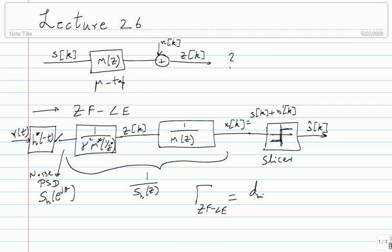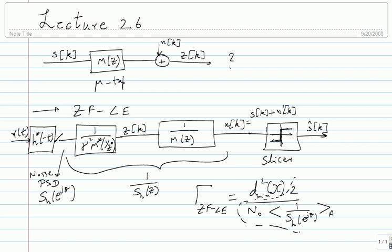The figure of merit for the zero-forcing linear equalizer has the form: d²_min(x) × (2/N₀) divided by the arithmetic mean of 1/S_H(e^{jθ}), where d²_min is the minimum squared distance in the signal constellation and the arithmetic mean is (1/2π) ∫_{-π}^{π} 1/S_H(e^{jθ}) dθ.